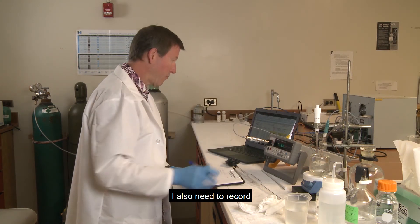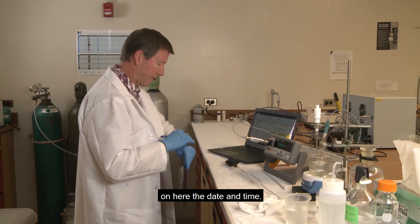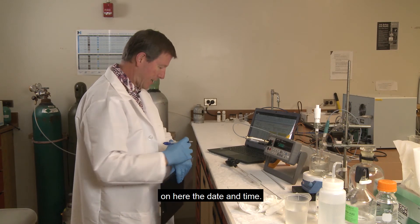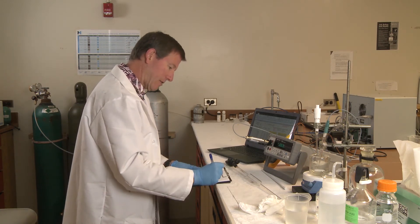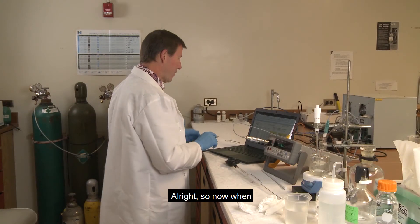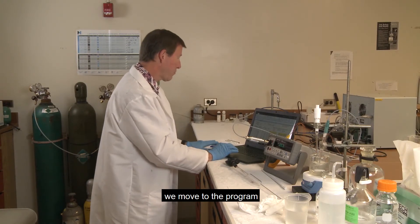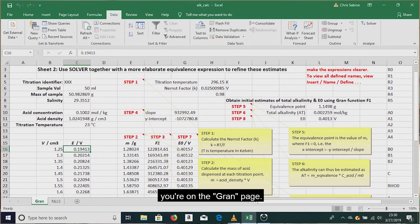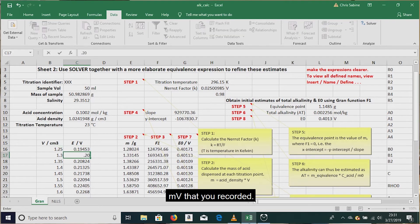I also need to record on here the date and time. All right, so now when we move to the program you want to make sure you're on the grand page. There's two pages, there's a grand page and a nonlinear least squares page. So make sure you're always typing on the grand page and it'll get copied over to the nonlinear side. So next to each volume you want to enter your millivolts that you recorded.